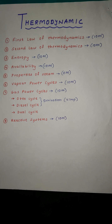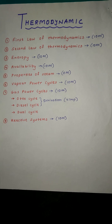Chapter number four: Entropy — one numerical for 10 marks, but it is based on many concepts. You can skip this numerical. Chapter number five: Availability — one numerical for 10 marks. It is very, very hard; skip it.